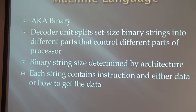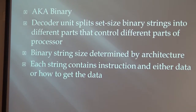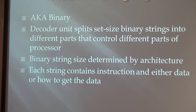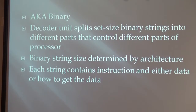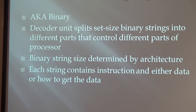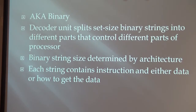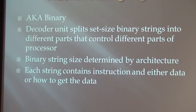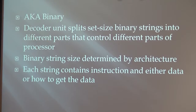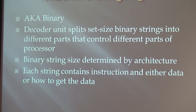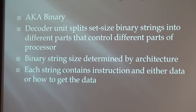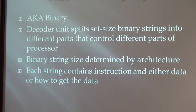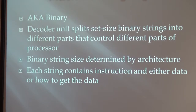And then the machine language — the only language the processor reads: binary. The decoder unit takes a binary string of a set size, given by the architecture type, and sends it to different parts of the processor that control the various operations. Each string contains the instruction and either the data to be operated on, or instructions on how to get the data, if you have to get it out of memory — which is usually gotten out of the cache unless something's going kind of wrong.